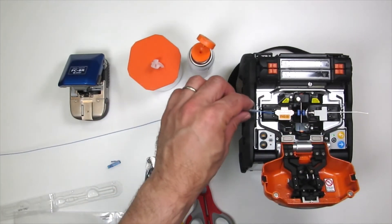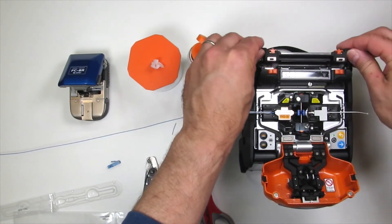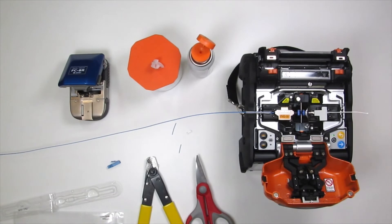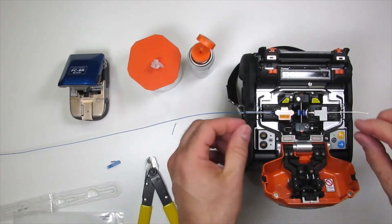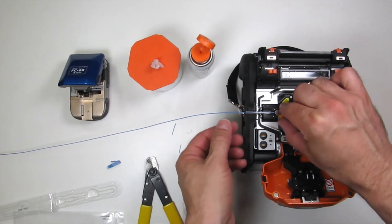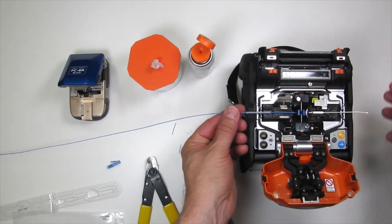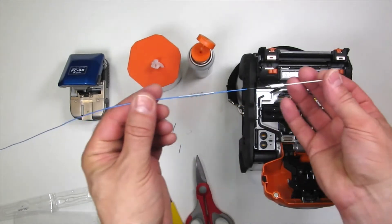First, slide the protective sleeve and spring up to the fiber clamp on the splicer. Then, carefully remove the splice from the clamps, being sure to keep a small amount of tension on the fiber.